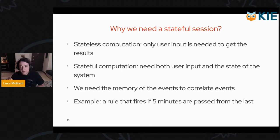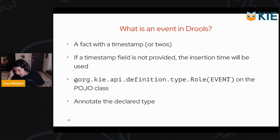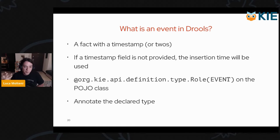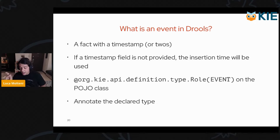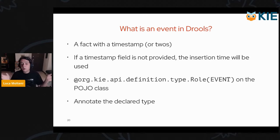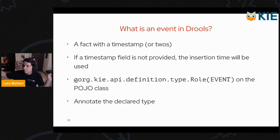If there are events that were received before five minutes, the rule shouldn't fire. The definition of an event in Drools is very simple: it's a simple object that you insert inside the working memory with a timestamp or two. If you don't provide the timestamp, the insertion time will be used. To declare that a class is not only a fact but also an event, you can use the annotation @Role with the value 'event', and you can use it either on the POJO if it's yours, on the declared type, or via DRL if the type comes from an external jar.